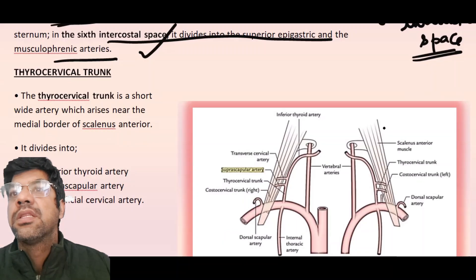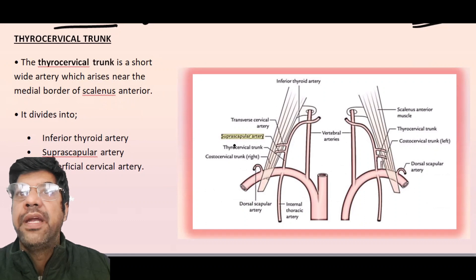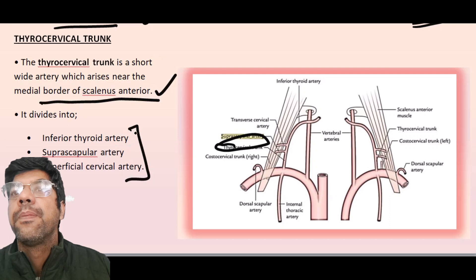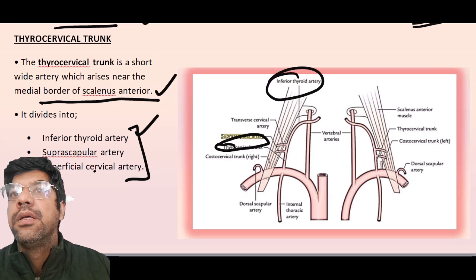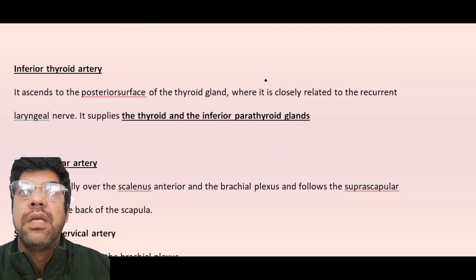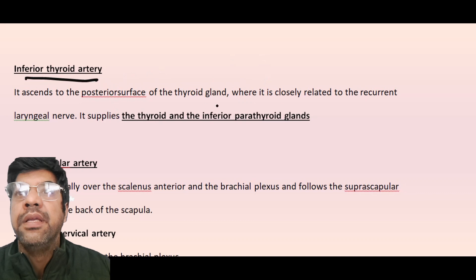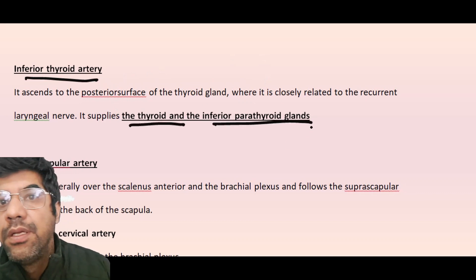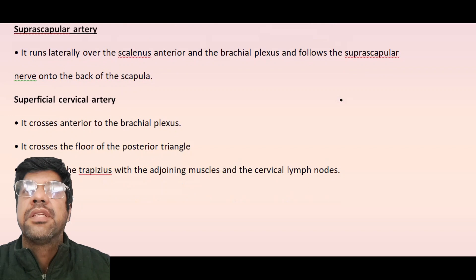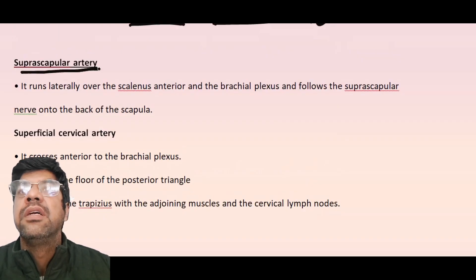The thyrocervical trunk is a short, wide artery that arises near the medial border of the scalenus anterior muscle. It divides into three branches: the inferior thyroid artery, the suprascapular artery, and the superficial cervical artery. The inferior thyroid artery supplies the thyroid and the inferior parathyroid glands.